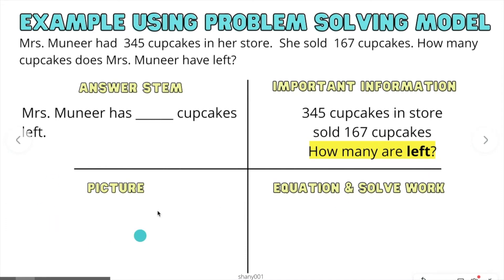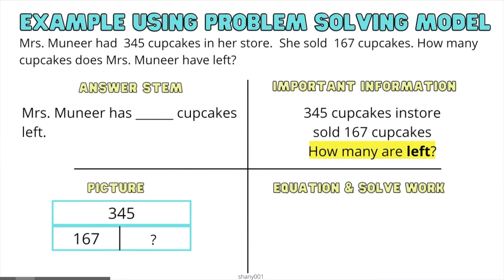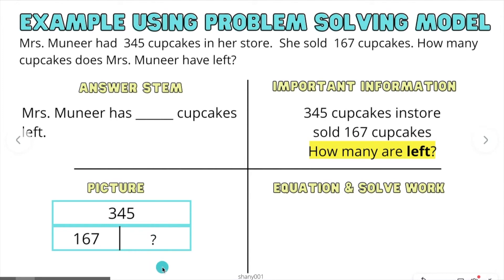What would our picture diagram look like this time? This is what it looks like. We have the whole. We took away 167, and now we need the other part. So in this case, we are not adding because we already have the total — we are subtracting.